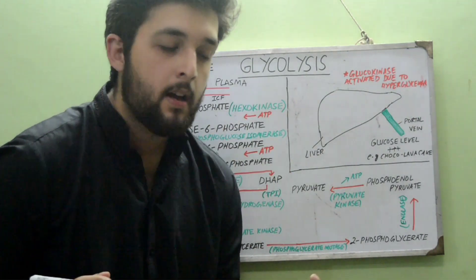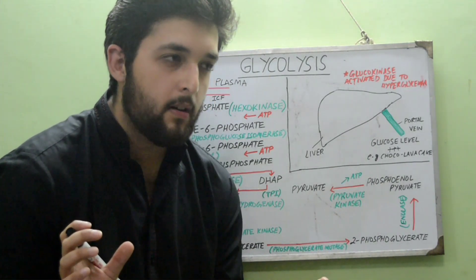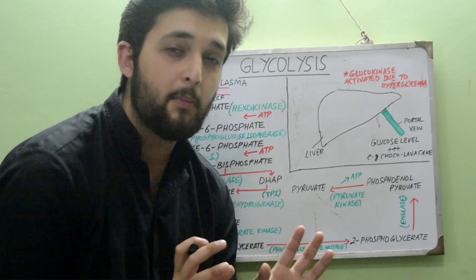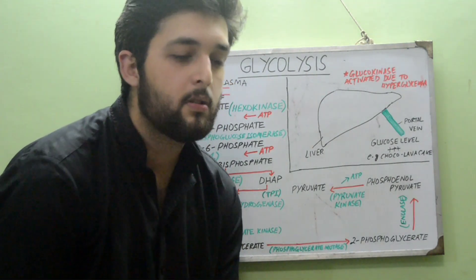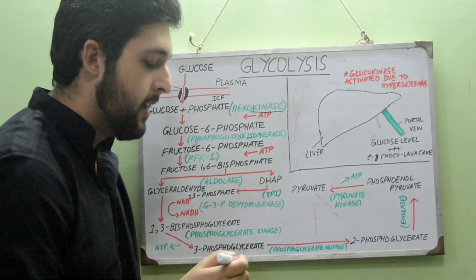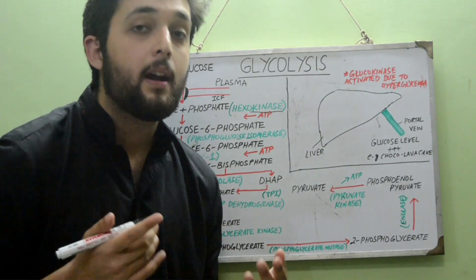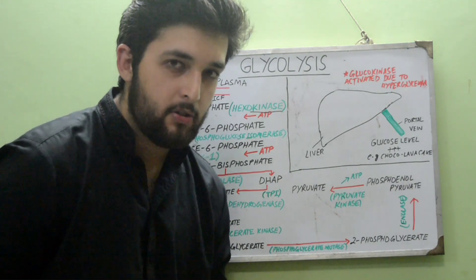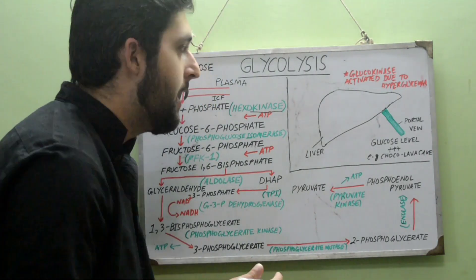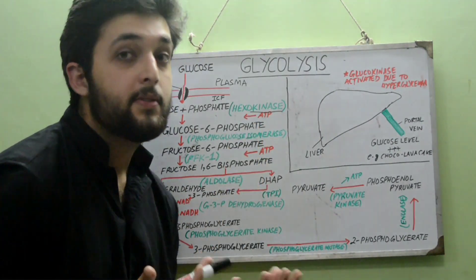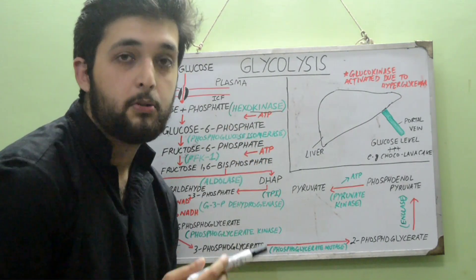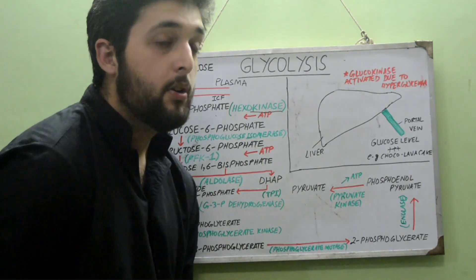Enzyme names tell you their function. If the enzyme name ends in '-kinase,' it means a phosphate group is being added — derived from kinetic energy, since phosphate provides energy. So hexokinase adds a phosphate to a hexose sugar. The opposite of kinase is phosphatase, which removes a phosphate.